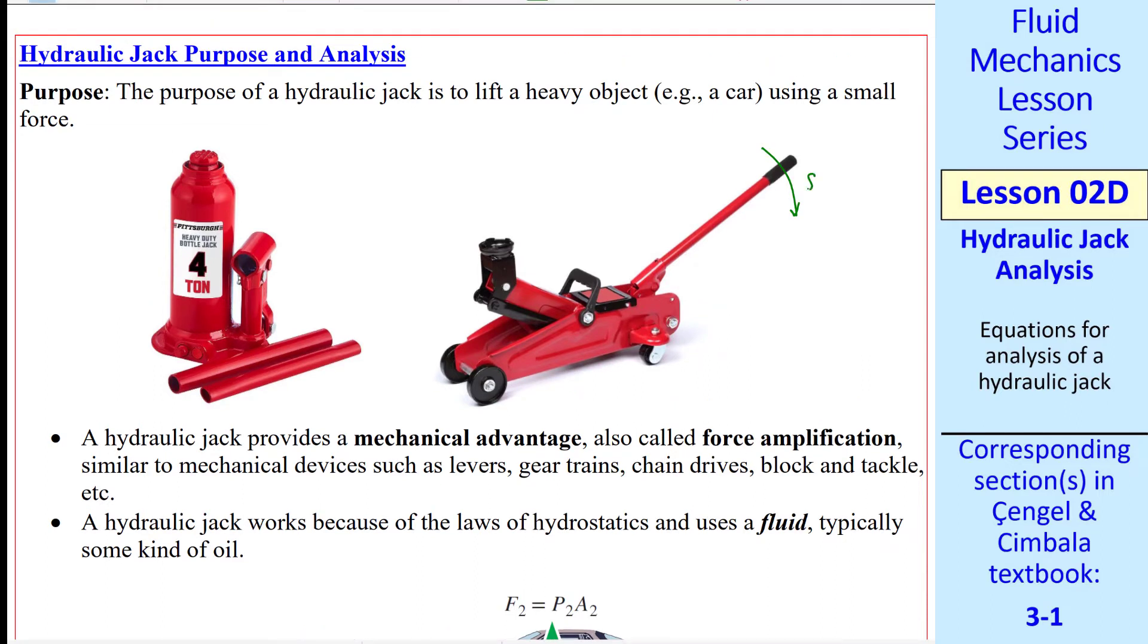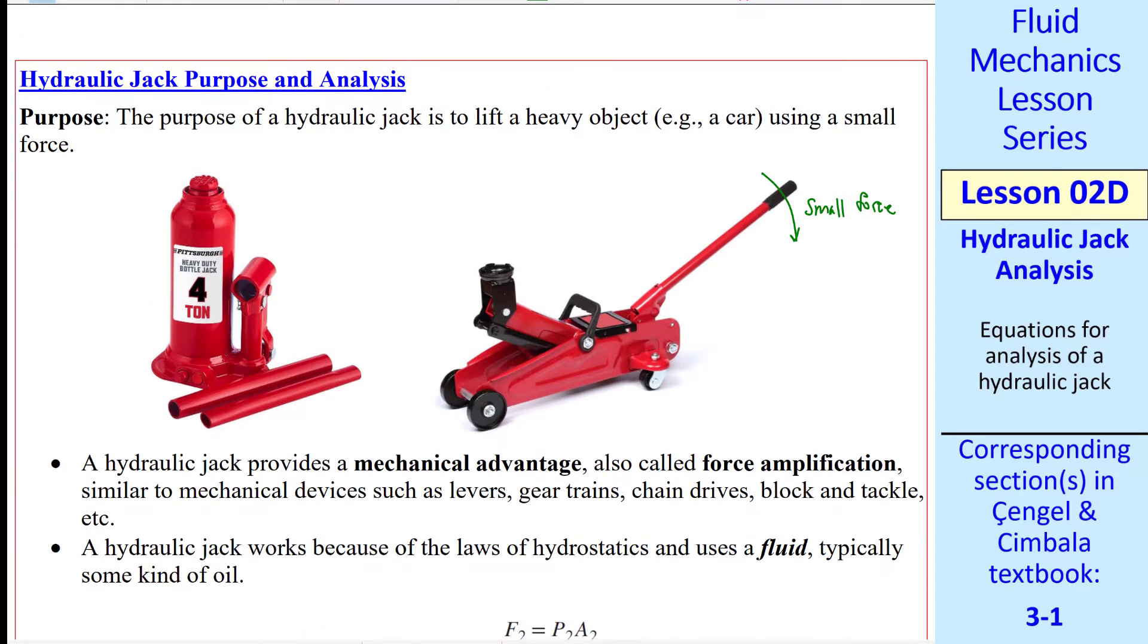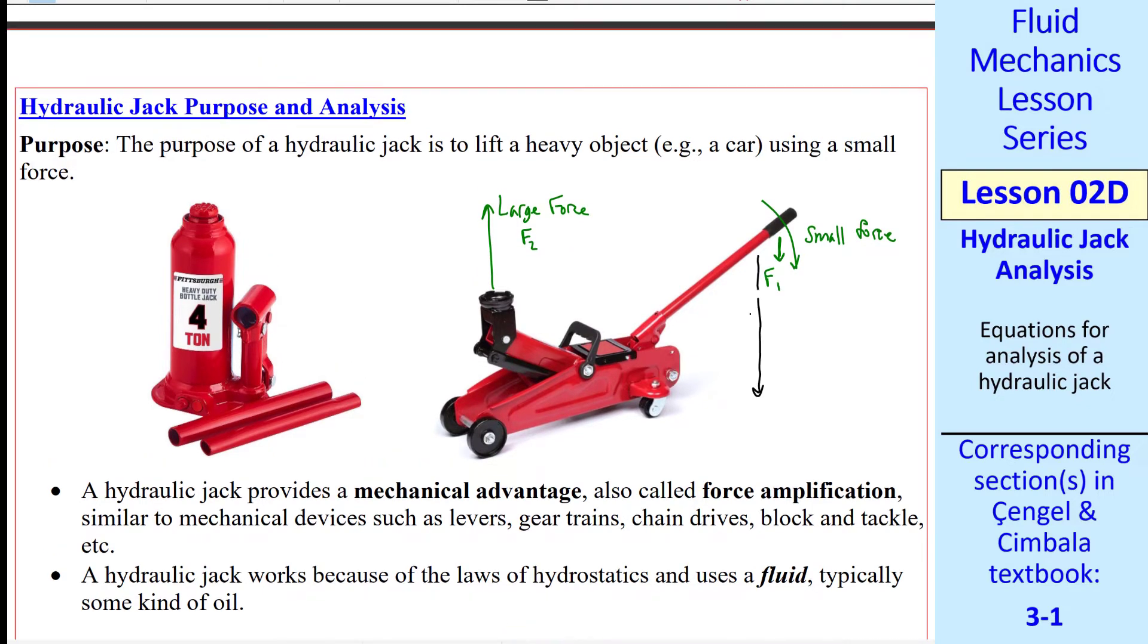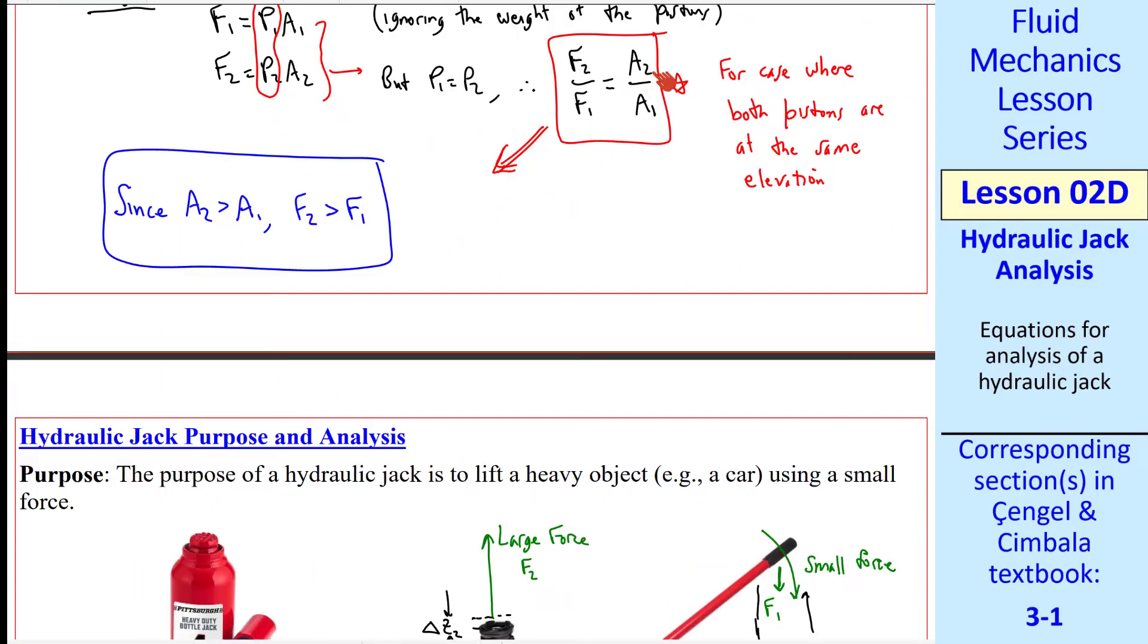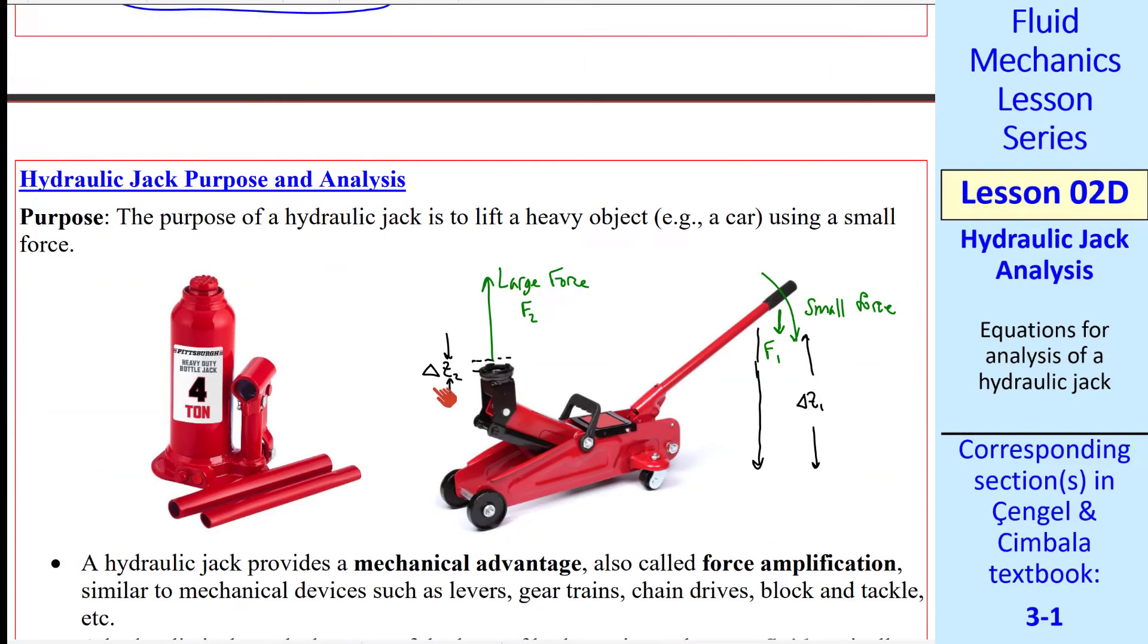The small force is provided here on the right side, whereas the large force, which we called F2, is on the left side in this diagram. As you push the handle down, you push some distance, say delta Z1. On the other side, the lifting side, delta Z2 is much smaller. So in our equation, since A2 is much bigger than A1, F2 is much bigger than F1. But delta Z1 required is much bigger than delta Z2 that you get out.